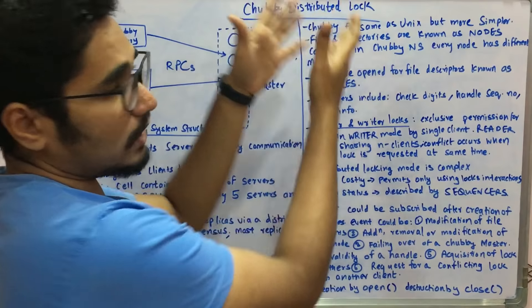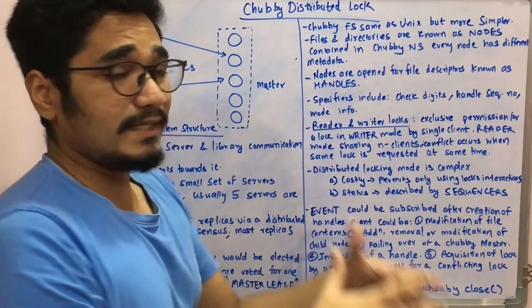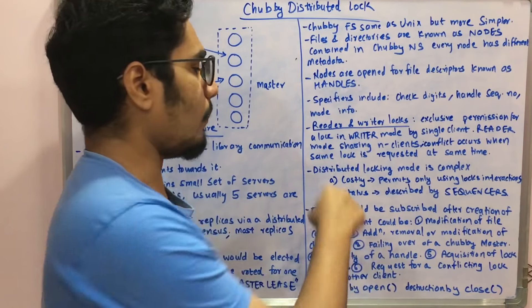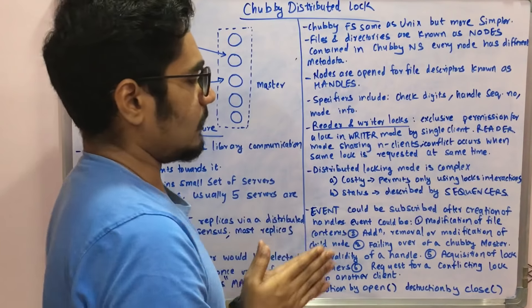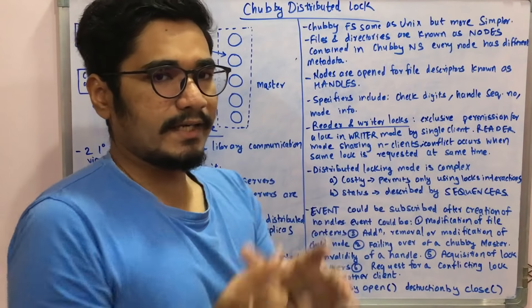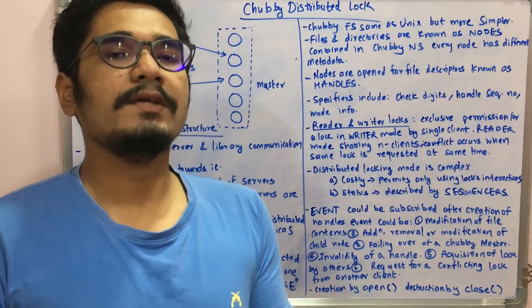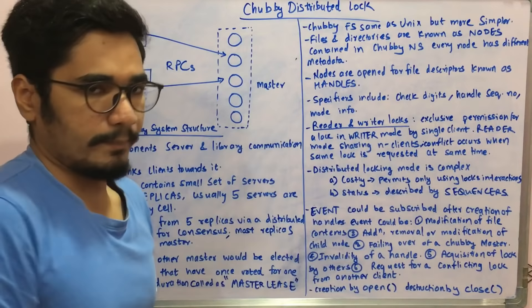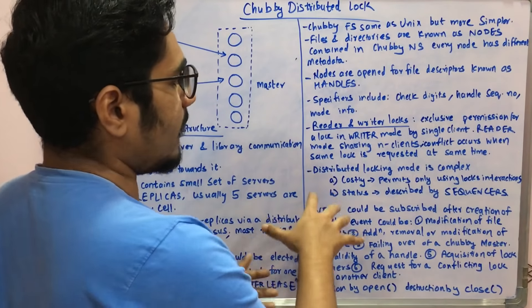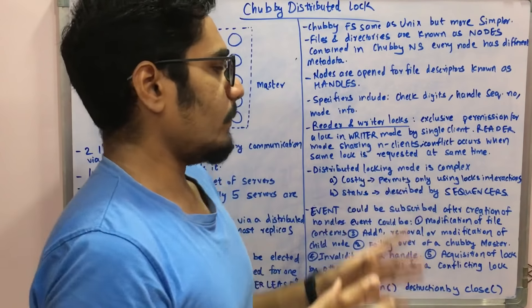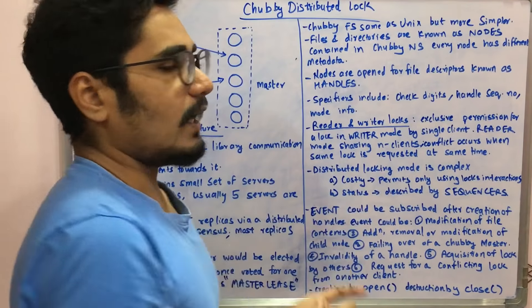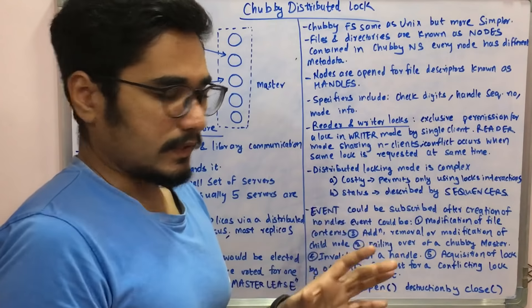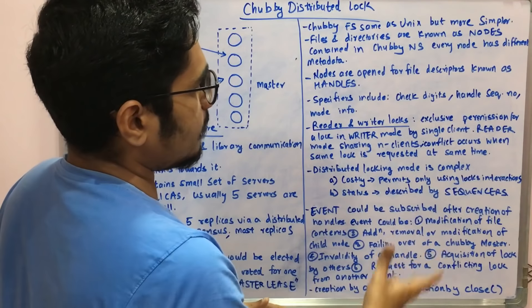Distributed locking in Chubby is complex and revolves around two main points. The first is cost — it is costly and permits only interactions which are currently using locks, so only those locks currently in use are labeled and permitted. The second is status — status is described by a string called sequences. These sequences are used to describe the status of a particular lock in Chubby.